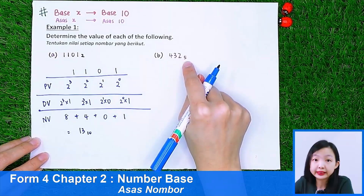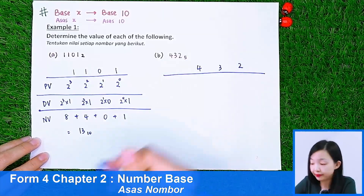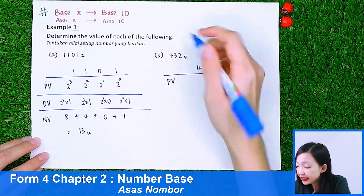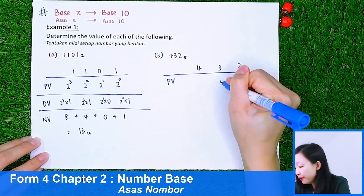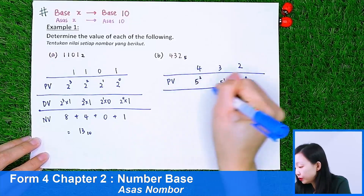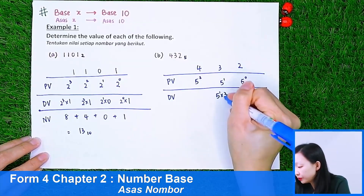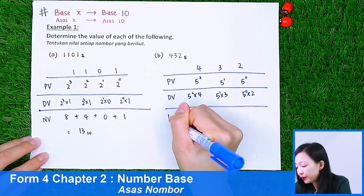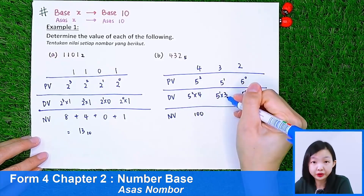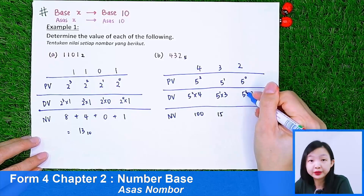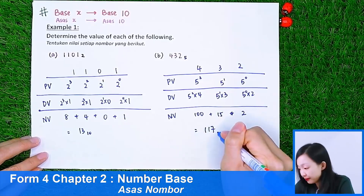Let me show you one more example: 4, 3, 2 with number base 5. The process is the same. First, find the place values. Since this is base 5, starting from the right: 5 to the power of 0, then 5 to the power of 1, then 5 to the power of 2. Then find the digit values: 5⁰ × 2, 5¹ × 3, 5² × 4. Finally the number value: 5² × 4 = 100, 5¹ × 3 = 15, 5⁰ × 2 = 2. After adding up, we get 117 in number base 10.